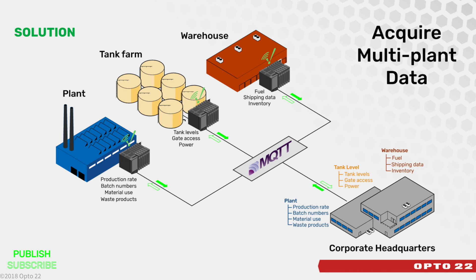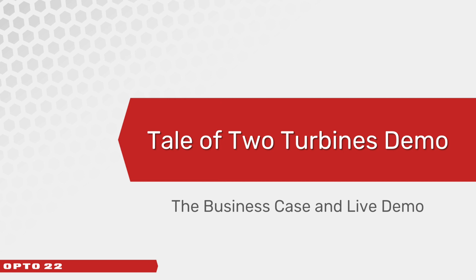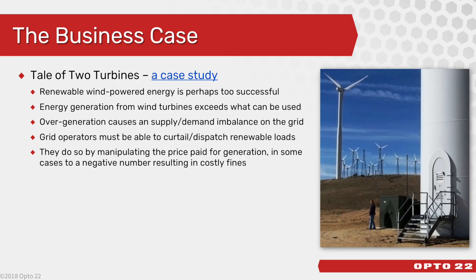This demo is based on a real business case scenario involving wind turbines, which I've named 'The Tale of Two Turbines.' We've written up this case study with our customer SCADA Solutions, and you'll be able to link to it once you receive the slides. It starts with an interesting phenomenon that has occurred in the state of California — renewable energy is proving to be too successful. Generation from renewables, including wind and solar, can be more than we might need at any given time. And if you generate more electricity than you can use, you have a problem with the grid — remember, you can't store extra electricity.